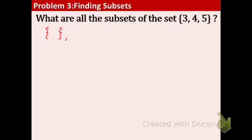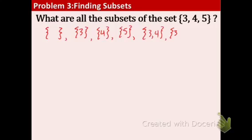Now we're going to list the subsets with one element only. So 3 by itself. 4 and 5. Now we are going to list the subsets with two elements. 3 and 4. 3 and 5. And 4 and 5.